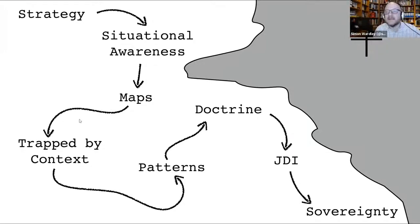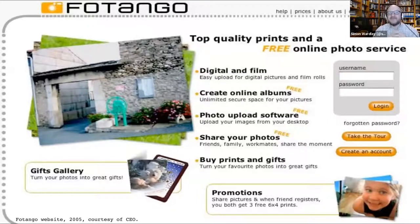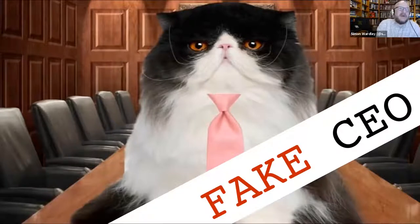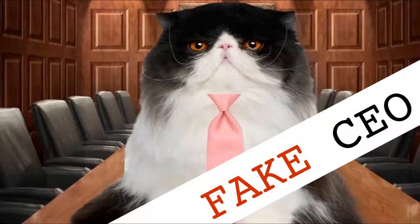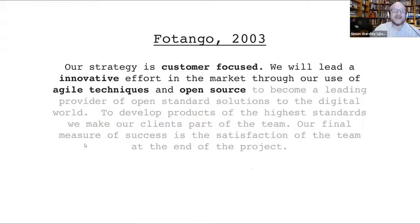Simon's story starts in 2003–2004 at a company called Fotango — an online photo service with about 16 lines of business, 10 million users, growing revenue and profitability. But there was a big problem: the CEO didn't have a clue what they were doing. They were just making it up as they went along. He knows this because he was the CEO. He'd come up with visions, blast statements, strategy — but hadn't got a clue.